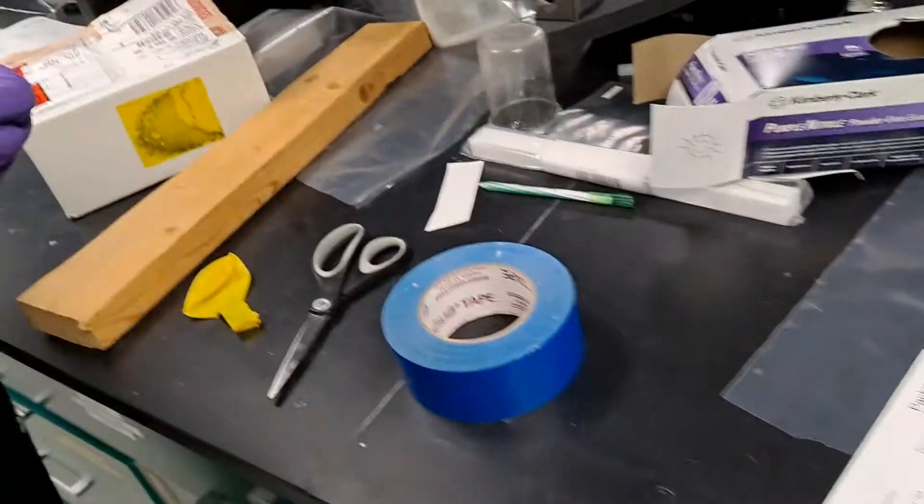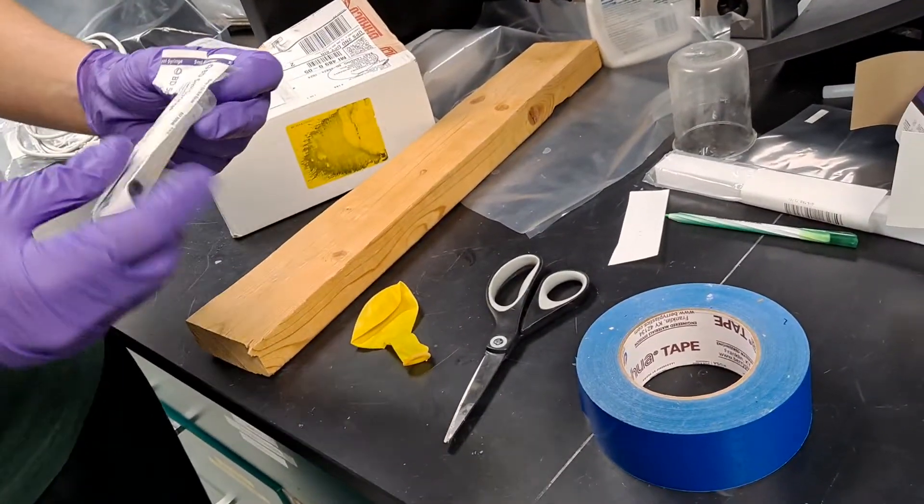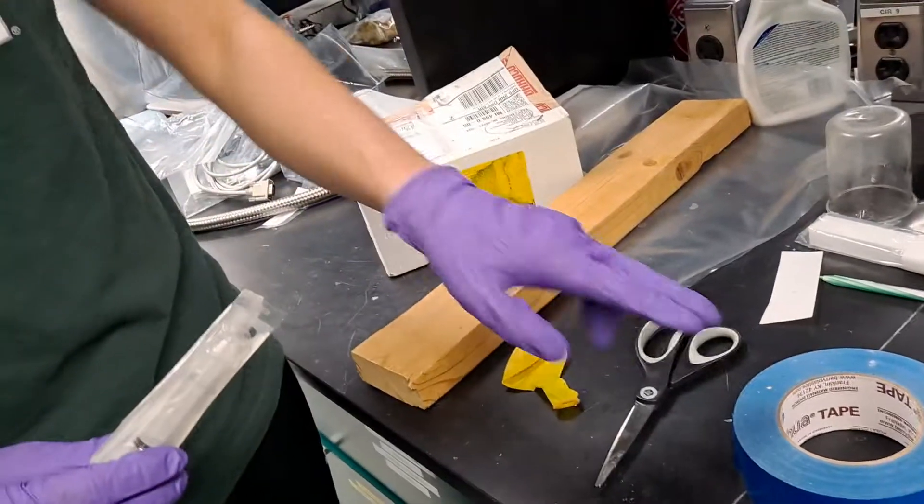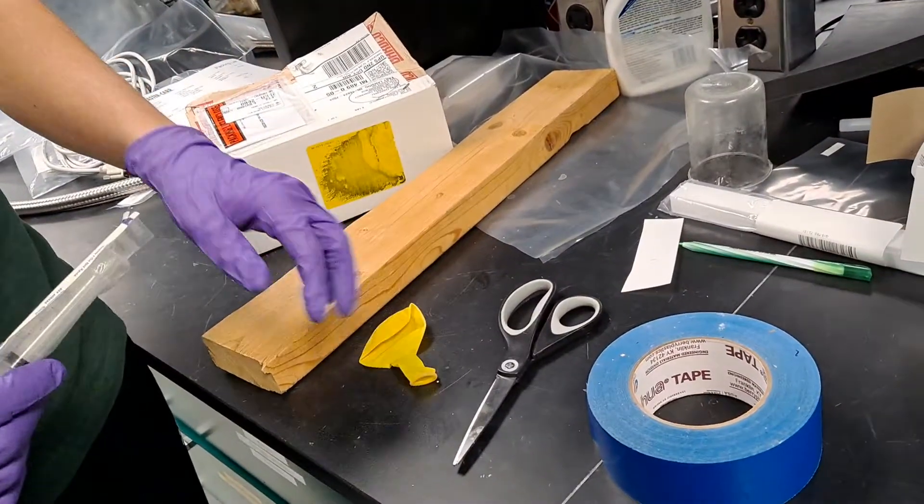I'm going to be going over how to make a nitrogen balloon. You need a 5mm syringe, duct tape, scissors, and a balloon.